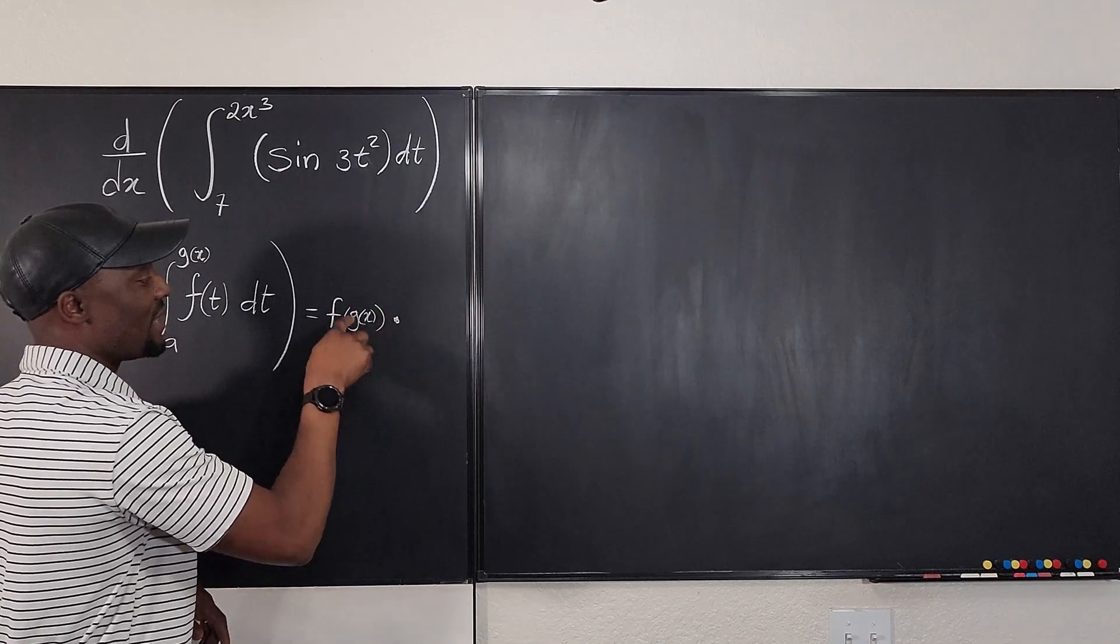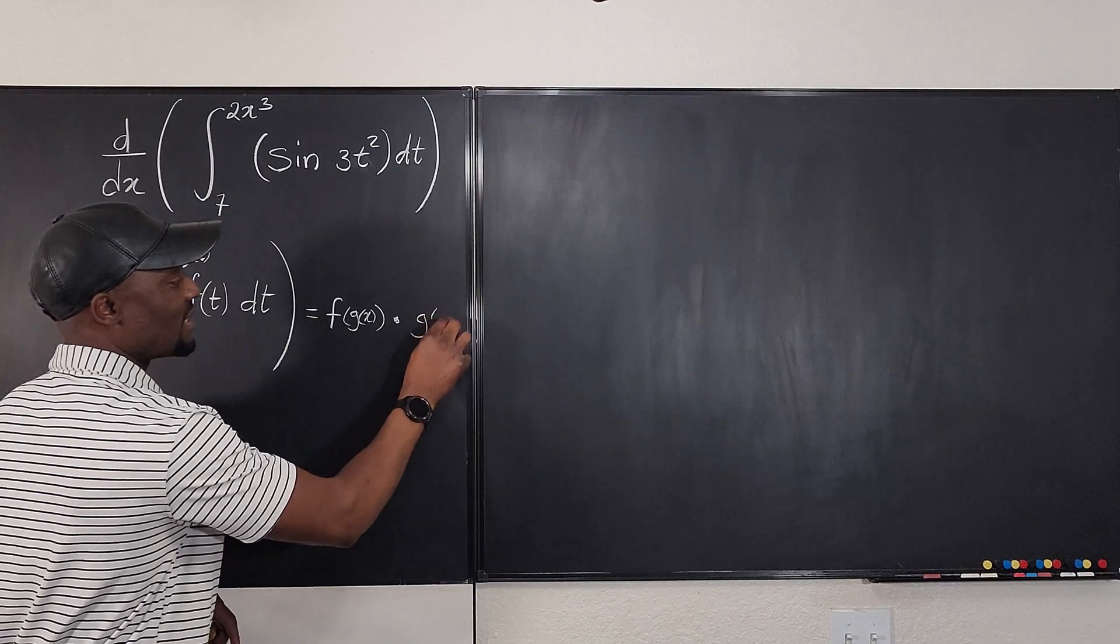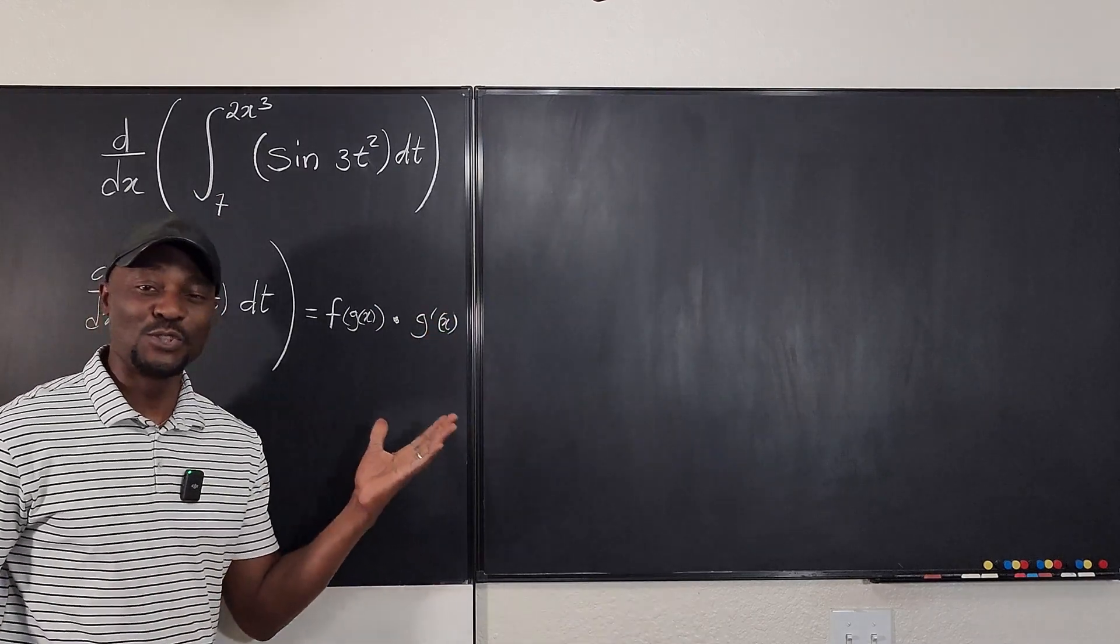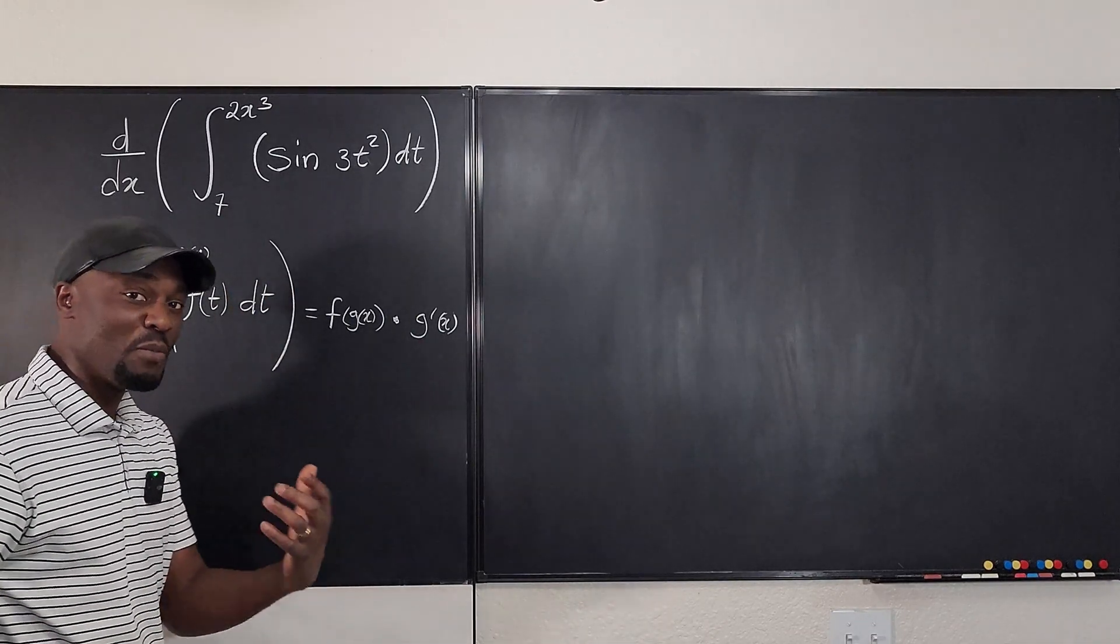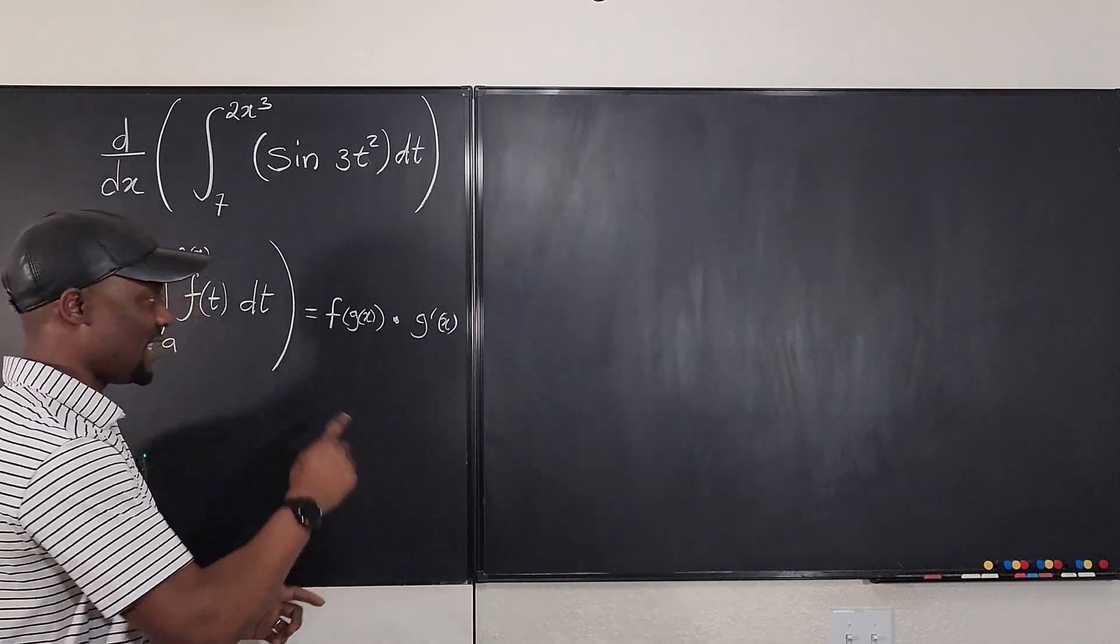...multiplied by the derivative of g of x. This is the part that many students do not realize, that when you differentiate this, this is what you get. Because what most students see is they just see x. Let me explain to you.